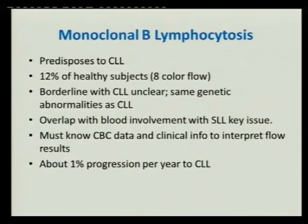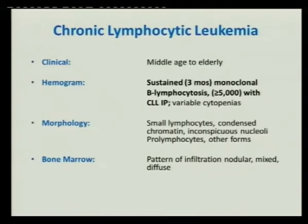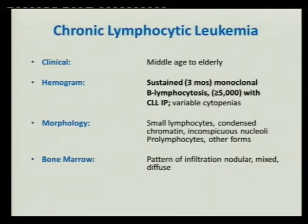MBL cases are precursors with a similar progression rate as MGUS in myeloma. Important steps involve clinical hemogram, morphology, and bone marrow. Sustained monoclonal B lymphocytosis — they say three months, though this isn't strictly restricted — and the number of clonal B cells should be more than 5,000 per WHO definition. The pattern of bone marrow infiltration has diagnostic importance, which we'll touch on briefly.